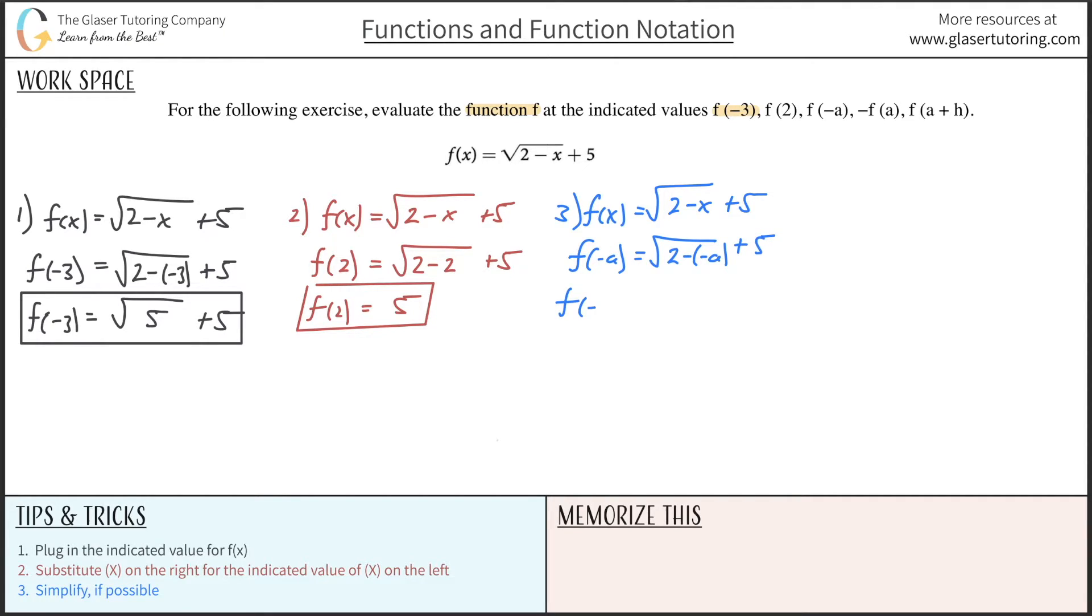And just, you know, combining some terms here, simplifying some of the signs, this would just be 2 plus a plus 5. And that's all I can do in terms of my simplification. So that's the answer for number 3.